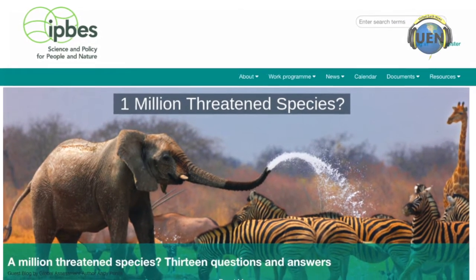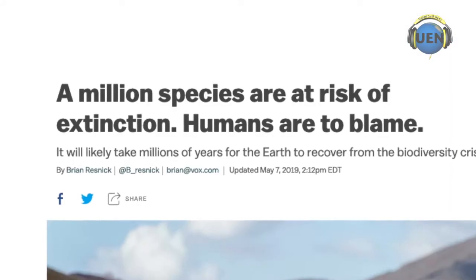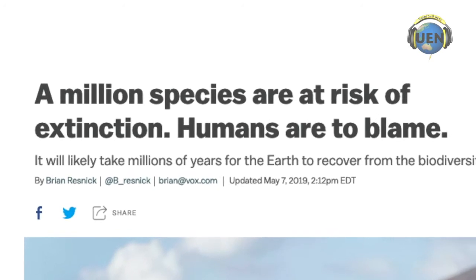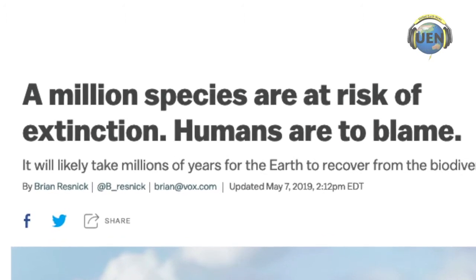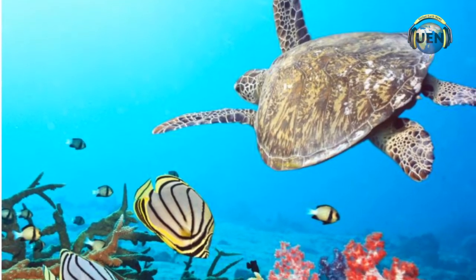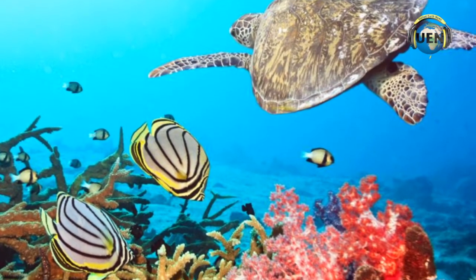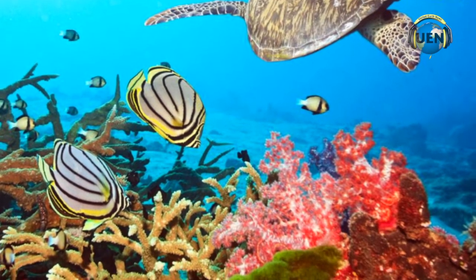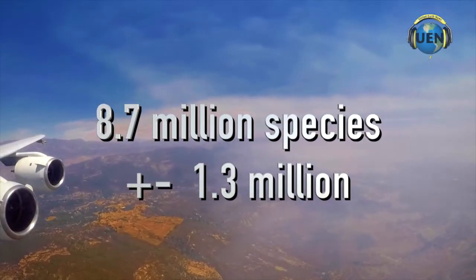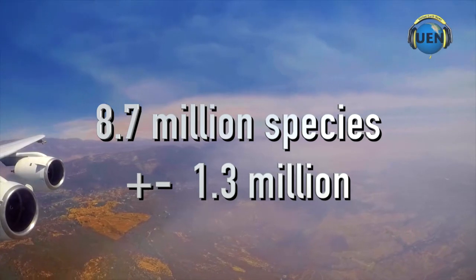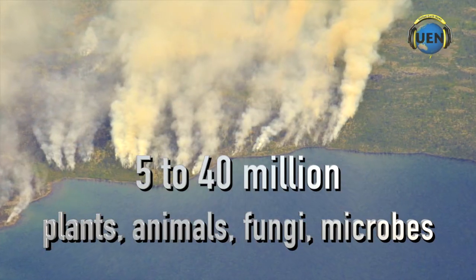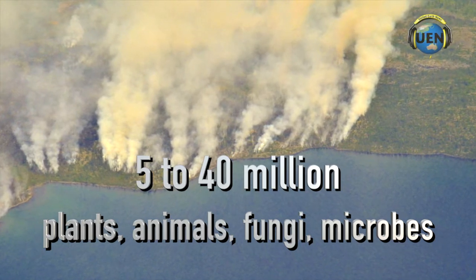The attention-grabbing headlines from this report stated that we stand to lose one million species on our planet. That brings up the question: how many species are on our planet? We can only estimate, and that estimate is about 8.7 million, give or take 1.3 million. Other estimates range from 5 to 40 million different kinds of plants, animals, fungi, and microbes.